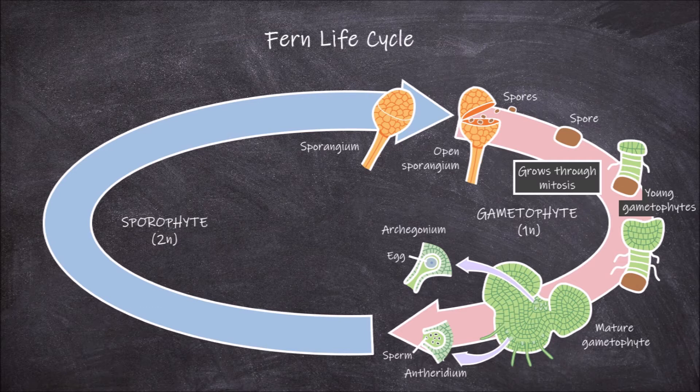The sporophyte generation starts with the fusion of a haploid egg and a haploid sperm. This process is called fertilization, and it occurs within the archegonium on the gametophyte. The sperm is released from an antheridium and swims to the egg in the archegonium. Because the sperm swims to the egg, the presence of water on the fern gametophyte is essential for fertilization to occur.